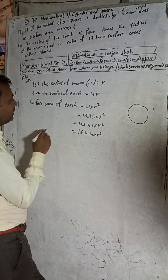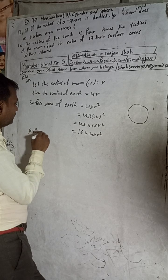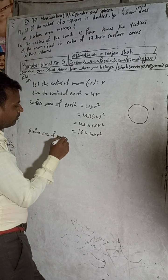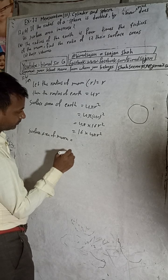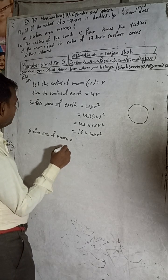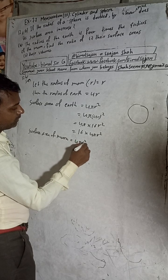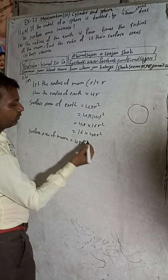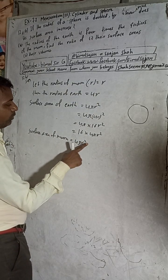And the surface area of the Moon — the formula for the surface area of the Moon is also 4πr². The radius of the Moon is R only, so the surface area of the Moon equals 4πr².